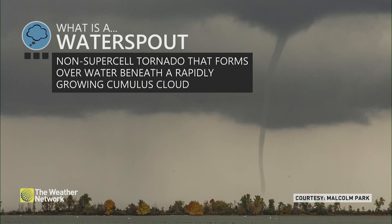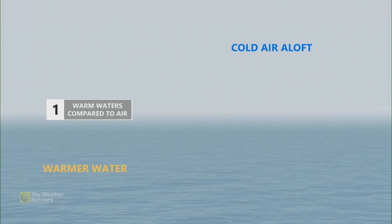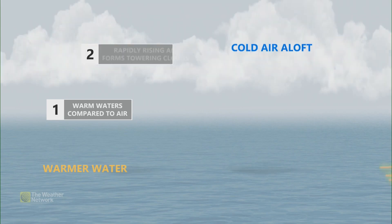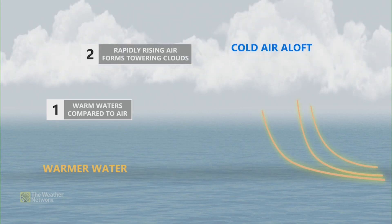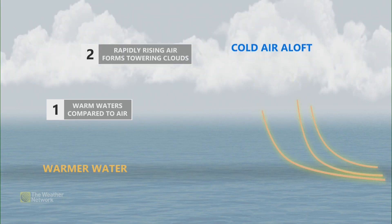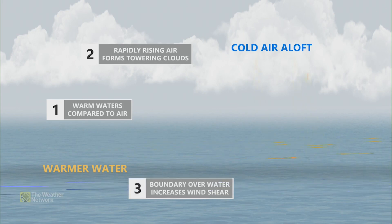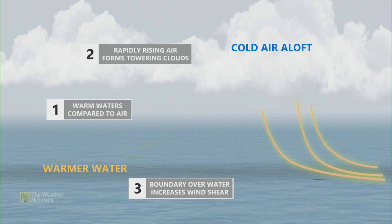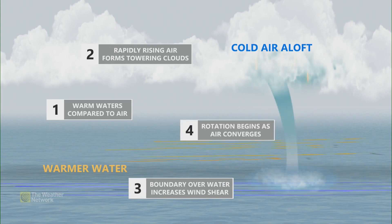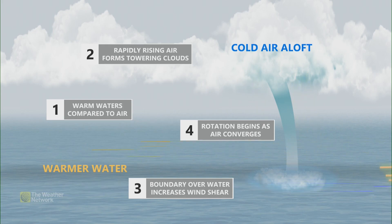Now what actually helps form this? Well, we have a few factors. The first being warm lake temperatures such as the Great Lakes with cold air above it. This creates a very strong temperature gradient. Then we get rapidly rising air that forms these clouds, followed by cold winds blowing over the warmer waters leading to instability, and lastly this allows for rotation to begin as air converges at the surface.